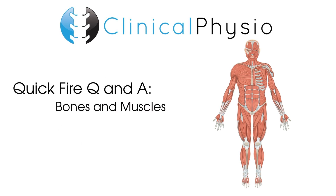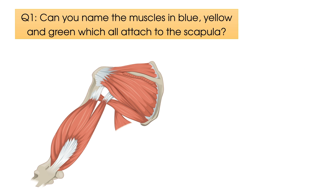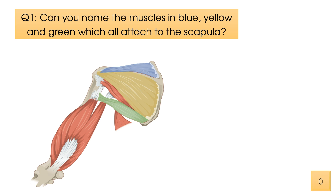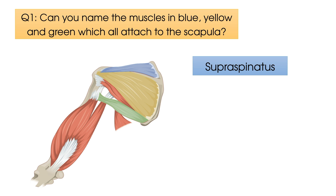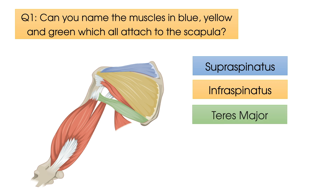Question number one: can you name the muscles highlighted here in blue, yellow, and green which all attach to the scapula? The muscle highlighted in blue, which lies superiorly to the spine of the scapula, is the supraspinatus. The muscle in yellow, which lies inferiorly to the spine of the scapula, is the infraspinatus. The muscle in green is teres major. Teres minor actually sits superiorly to teres major.